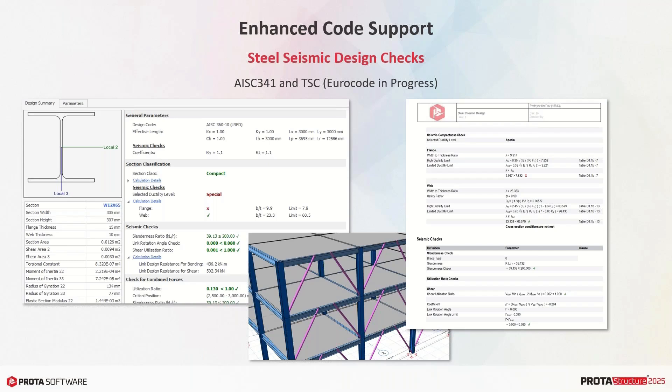Another important undertaking was implementing seismic checks for steel members according to AISC 341 and Turkish codes. Eurocode support is not fully implemented yet and is a work in progress. Seismic provisions limit the usage of steel profiles — for special moment frames, compact sections must be used, and Protostructure will fail the design if this requirement is not met. In eccentrically braced frames, seismic link checks must be performed, and these are now in the software. Results are reported with their associated clauses in the detailed report.